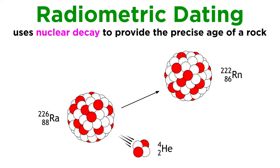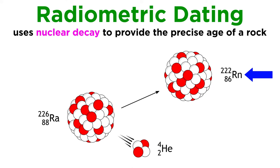Radiometric dating, or absolute dating, is a method of extracting exact ages from rocks that utilizes the concept of nuclear decay, where radioactive nuclei emit a high energy particle to become a nuclide of some other element.